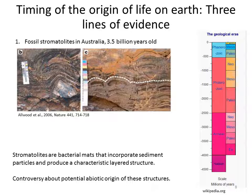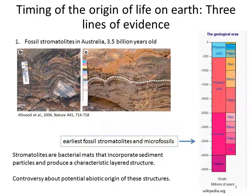So when did life originate? There are three different kinds of data that help us date the time before which life must have originated. The first type of evidence are fossil stromatolites from Australia that are 3.5 billion years old. Stromatolites are bacterial mats that incorporate sediment particles and produce a characteristic layered structure, and you can see some of these fossil stromatolites on the slide. There is some discussion about a potential abiotic origin of these structures, but generally it is accepted that these ancient fossils indeed represent stromatolites. So based on these fossils, life must have originated 3.5 billion years ago or earlier.